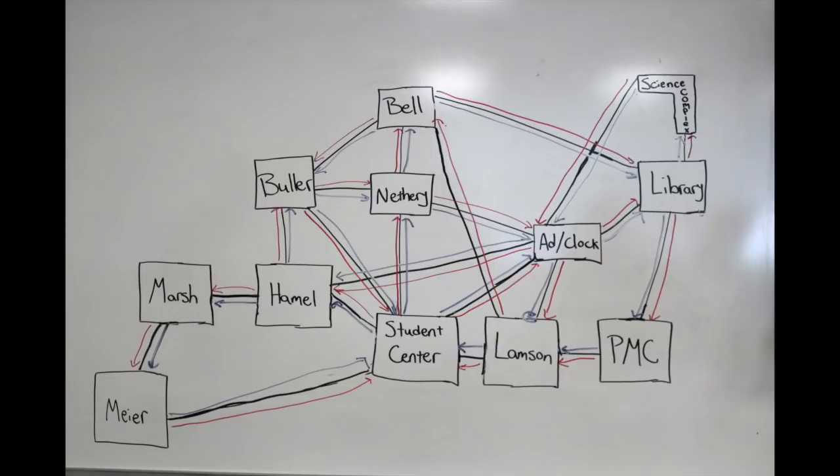Let's go try out our new graph and find the Eulerian circuit. But where should we start? Since it is a circuit and it ends and begins in the same place, we can start anywhere we want. Let's start at Bell Hall.